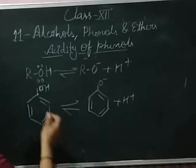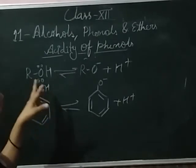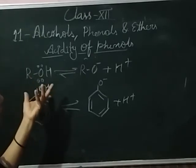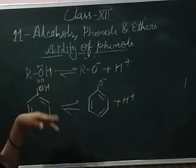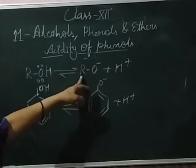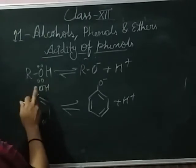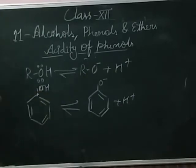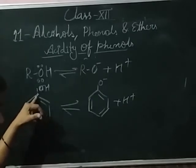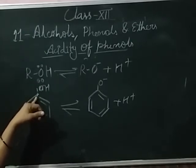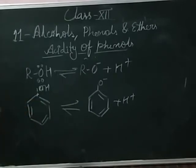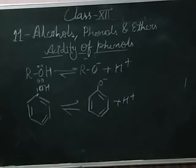Both alcohol and phenol have the hydroxyl group, so why is phenol more acidic than alcohol and water? This is easily understood by the ionization of alcohol and phenol. When alcohol ionizes it forms the hydroxide ion and releases the hydrogen ion, whereas when phenol ionizes it forms the phenoxide ion and releases the hydrogen ion. The hydroxyl group in phenol is attached to an sp2 hybridized carbon atom.